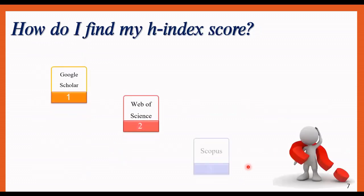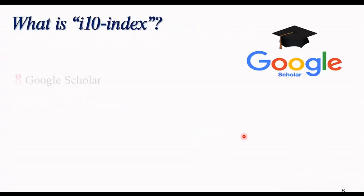How do I find my H-index score? You can try to find it from Google Scholar, Web of Science, and also Scopus. If you have other ideas, please put the comments which other sources can show us. Put them in the below video. And then another question would be important for us to better understand, it's about i10.